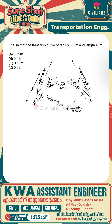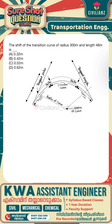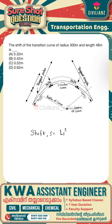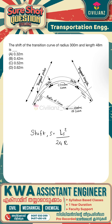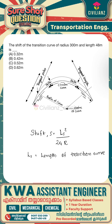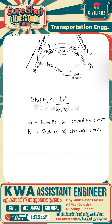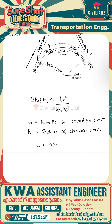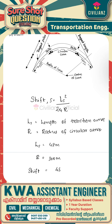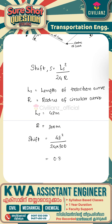The transition curve will be joined by the circular curve. To calculate the shift, S is equal to Ls squared divided by 24R, where Ls is the length of the transition curve and R is the radius of the circular curve. So the shift equals 48 squared divided by 24 into 300, which gives 0.32m.